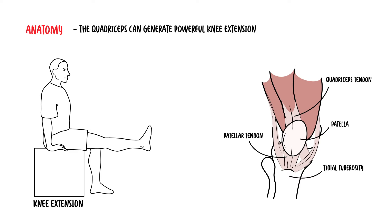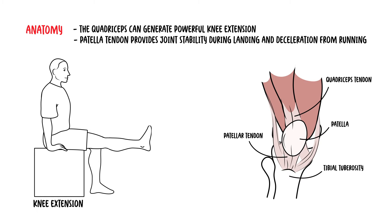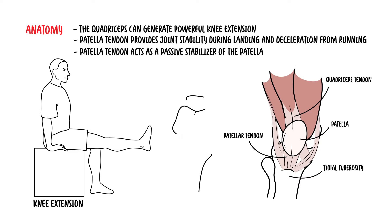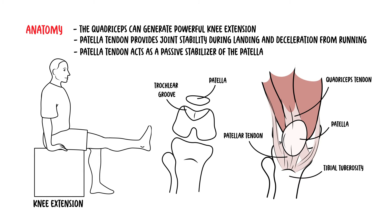In addition to its role in knee extension, the patella tendon provides joint stability during landing and deceleration from running, and it acts as a passive stabilizer of the patella bone. The patella moves along what's called the trochlear groove during knee extension and flexion, moving up and down this trochlear groove.